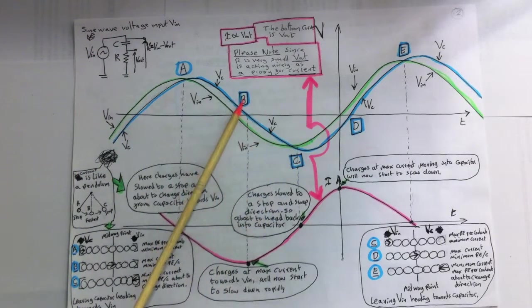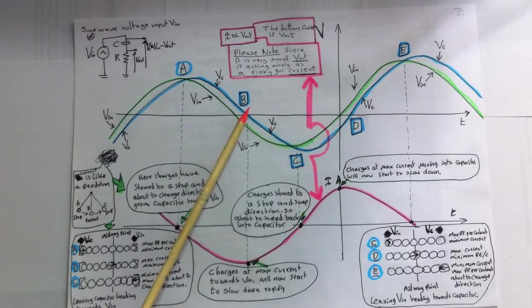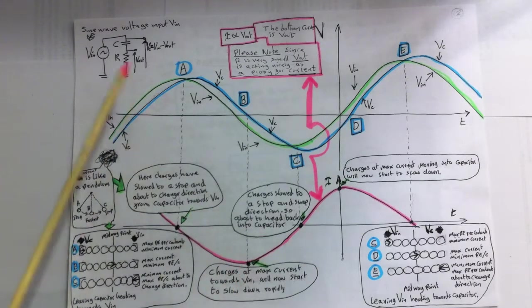At B, position B, we see the voltage is changing at its fastest pace, heading to a lower voltage value. This means charges will be moving at their maximum rate here, leaving the capacitor heading towards Vin. So they're leaving the capacitor heading towards Vin.